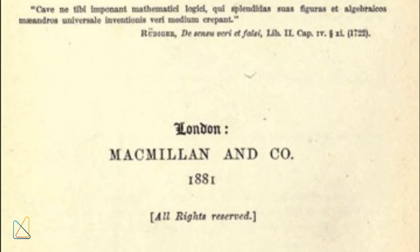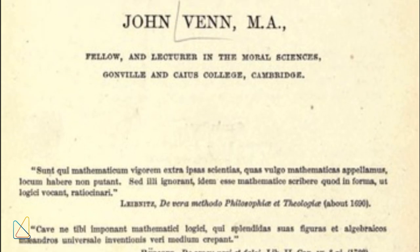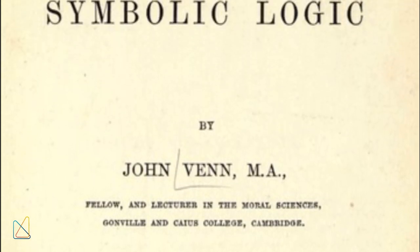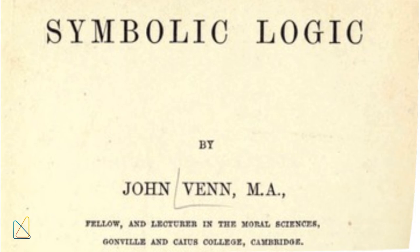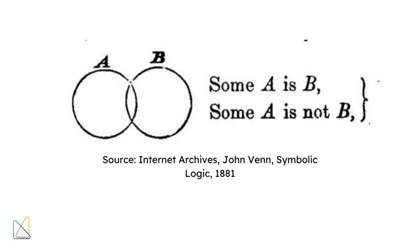In 1880, John Venn introduced Venn diagrams in his book Symbolic Logic. These diagrams use overlapping circles to show the relationships between different sets, making them an essential tool in logic, set theory, probability, statistics, and computer science.